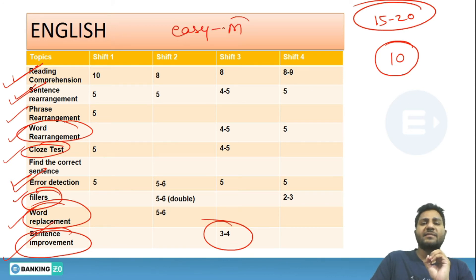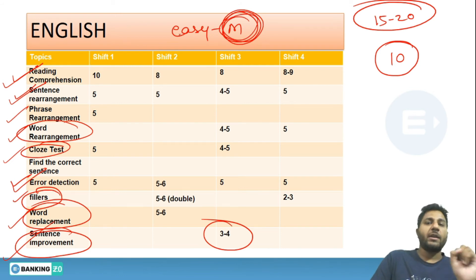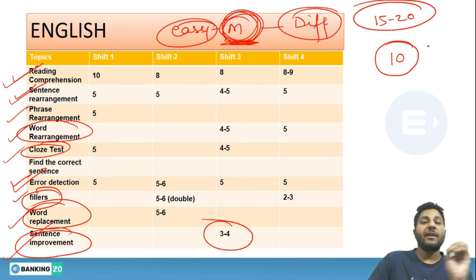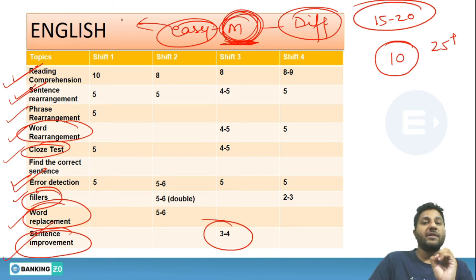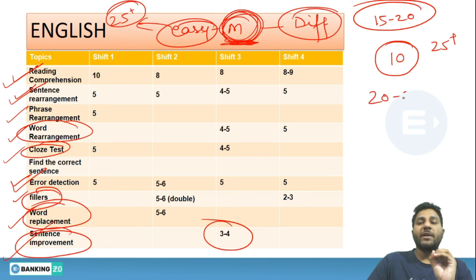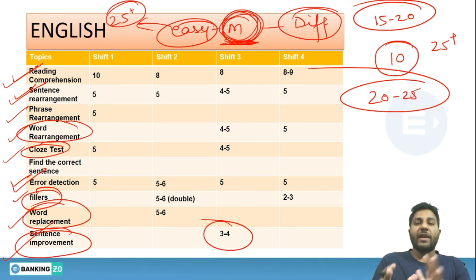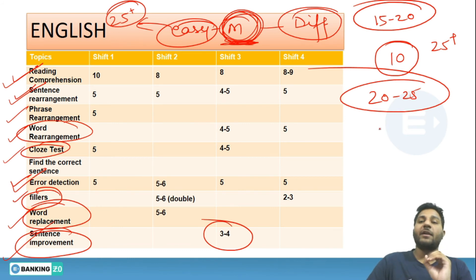The English portion was between easy to moderate — I would say it was a moderate paper. I wouldn't say easy and I wouldn't say difficult, because if it were difficult you wouldn't see attempts above 25, but if it were easy you'd continuously see attempts of 25. Students are in between 20 to 25, which means the paper was moderate level. Accuracy will come in handy in this kind of examination.